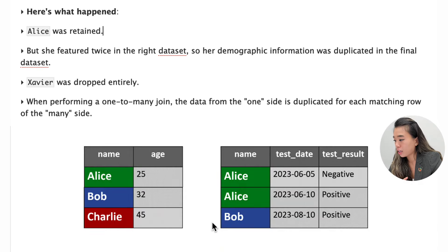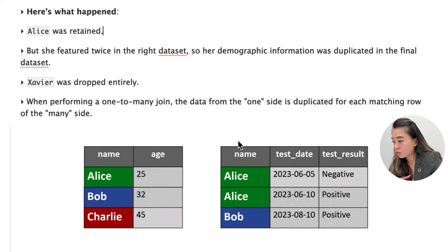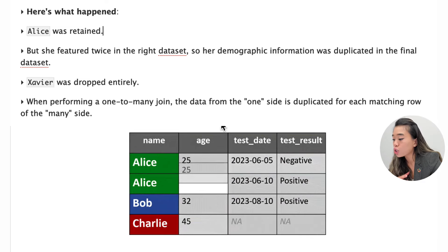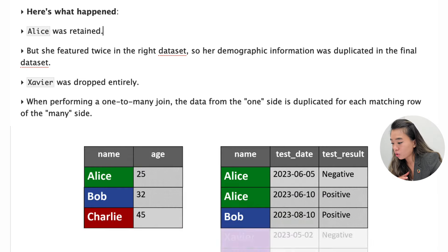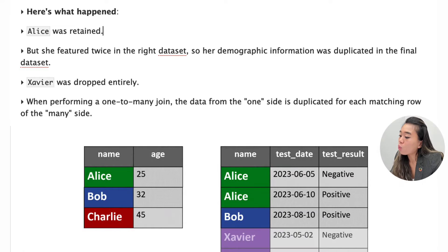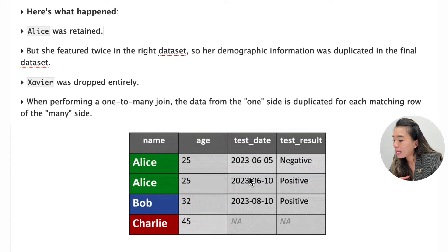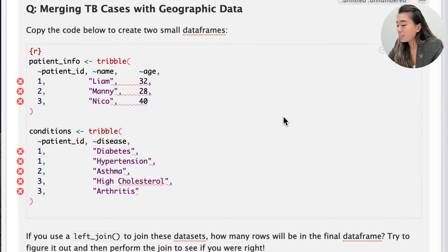We add two or more rows to our test_info data frame with new test information. Within our left_join, we input demographic as the first argument and the test_info_many data set as the second. Looking at the GIF: Alice was retained in the final data set, but because she appeared twice in the right data set, her demographic information was duplicated. Xavier was dropped completely. The key takeaway is that in a one-to-many join, data from the one side is duplicated for each matching row on the many side.